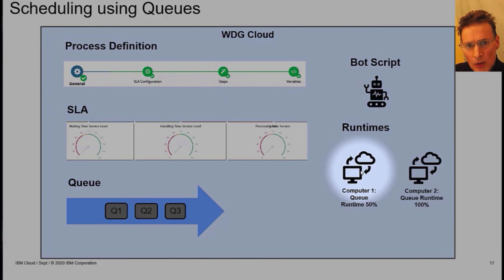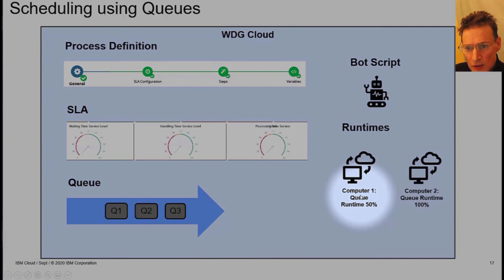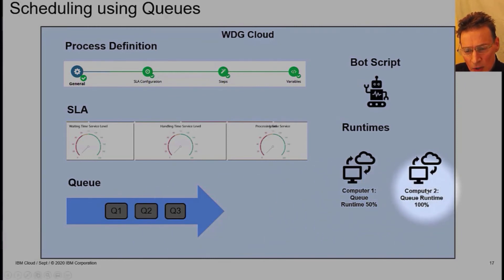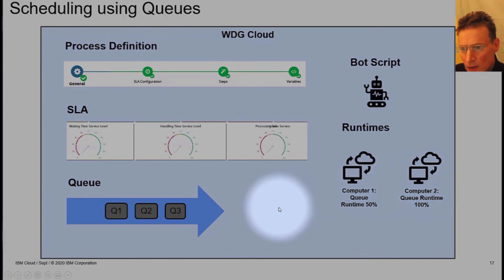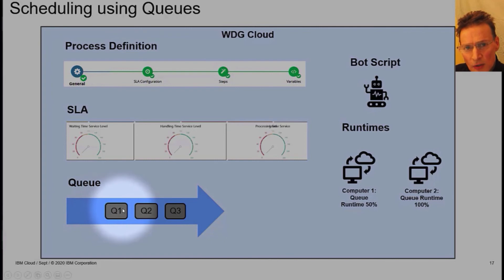The other important aspect of a process definition is the runtimes. You can schedule the bots to run on one or more computers, and each computer has what's called a queue runtime parameter that allows you to set the number of runtimes allocated to running a queue. In the example here, on computer one I've allocated 50% - so if the computer had two runtimes, we'd only ever use one to process queues. On computer two I've got a queue runtime of 100%, so it would use all allocated runtimes. Finally, the queue itself is defined in WDG and will have work items in it - for example, emails to process or customers to onboard.